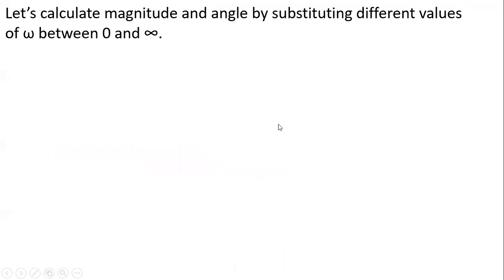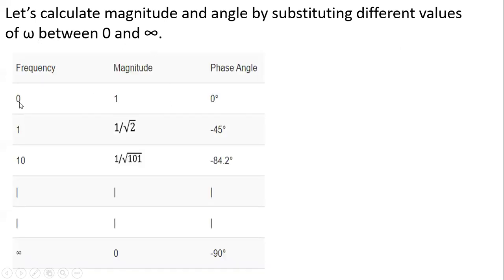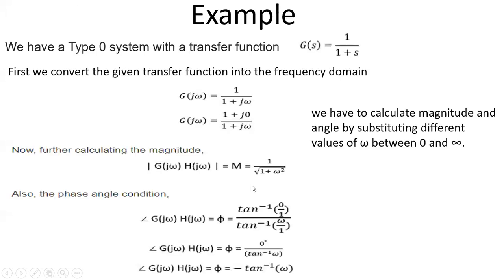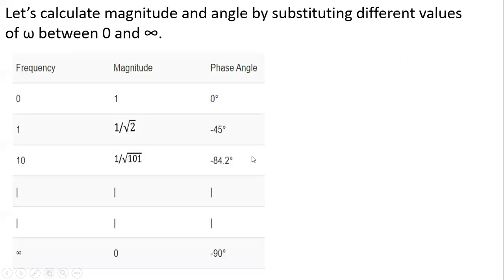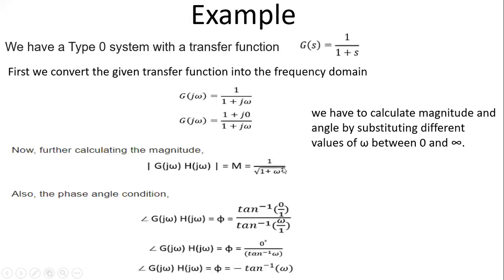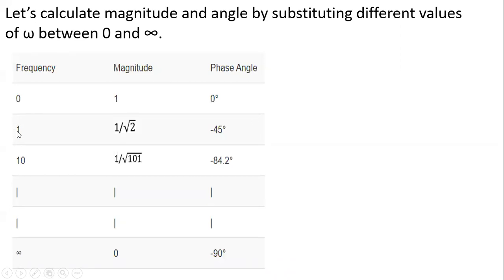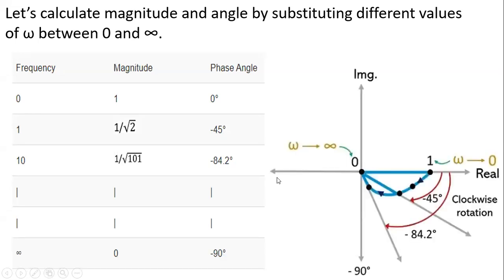Let's calculate the magnitude and angle for different values of omega between 0 and infinity. For ω = 0: magnitude = 1 and phase angle = −tan⁻¹(0) = 0°. For ω = 1: magnitude = 1/√2 and phase angle = −45°. For ω = 10: magnitude = 1/√(1+100) ≈ 0.1 and phase angle = −84.2°. For ω → ∞: magnitude = 0 and phase angle = −tan⁻¹(∞) = −90°.